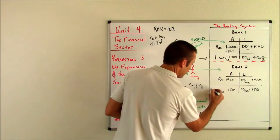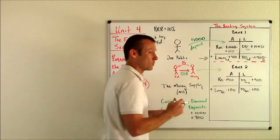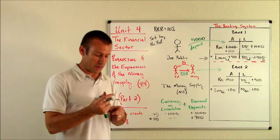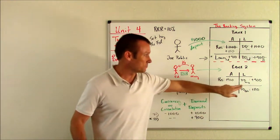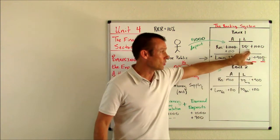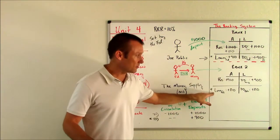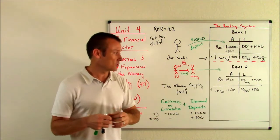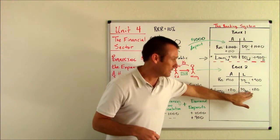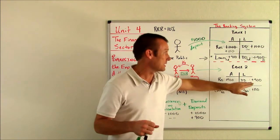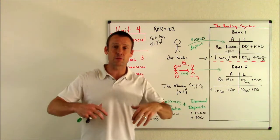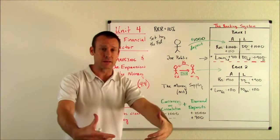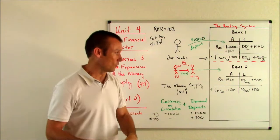And guess what? That loan, just like this loan, expanded the money supply. Bob can now buy 810. Mary can still buy 900. Joe can still buy 1,000. The money supply is beginning to expand. And it's going to continue to do so.